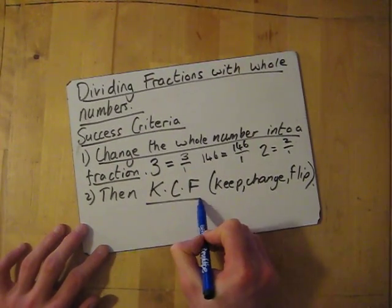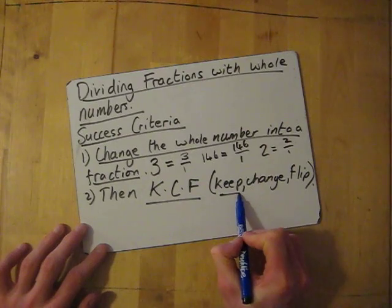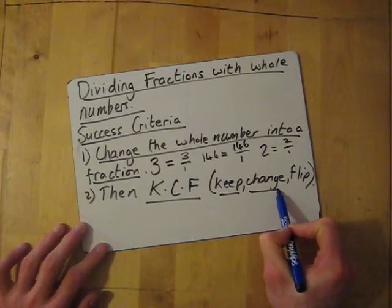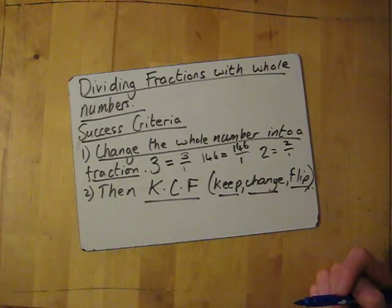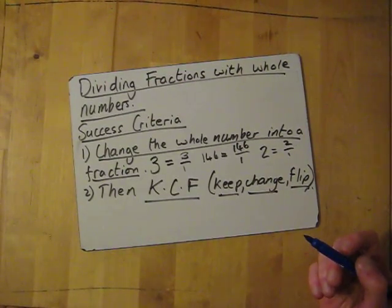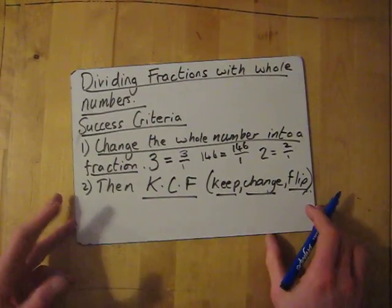Then KCF, we need to keep the first part of the question, I need to change the divide to multiply, and we need to flip the last two numbers on the fraction and then just multiply it. So I'm going to show you how to do that.